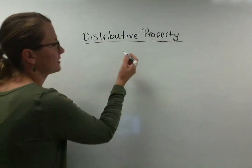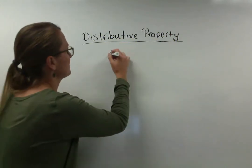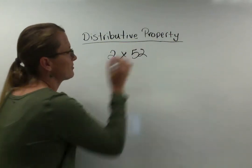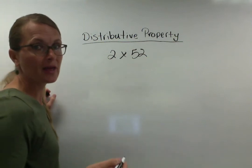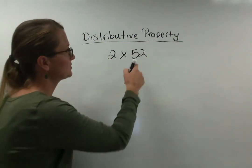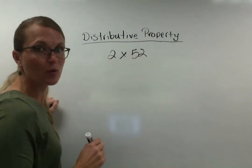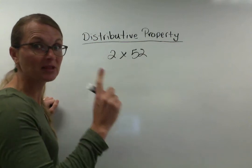Let's start with something kind of the one I already gave you for an example. Let's say we have 2 times 52. Now 2 times 52 can look pretty complicated but what we can do is we can take the bigger number and we can break it apart based on its place value.